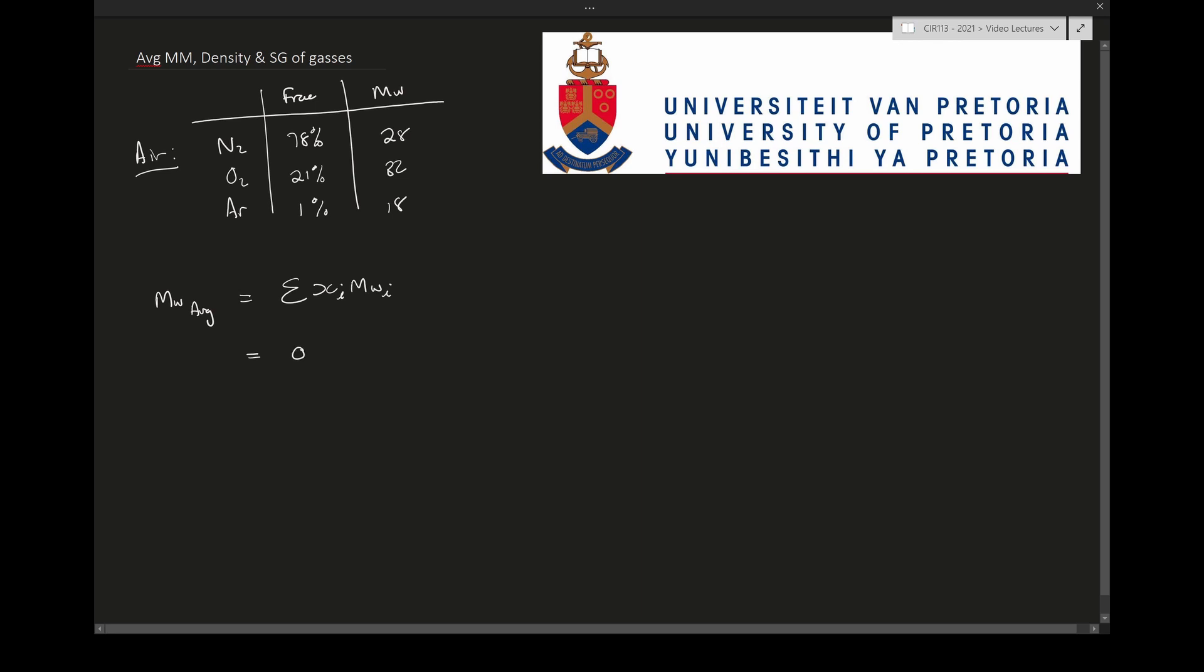So we're going to say that 0.78, and this is moles nitrogen over moles total, multiplied by the molecular mass of the nitrogen, which will be grams nitrogen over moles nitrogen. This is going to be 28. You can see if we take these units, which is mole N2 over mole total, and we multiply it with gram N2 over mole N2, we're going to get gram N2 over total moles.